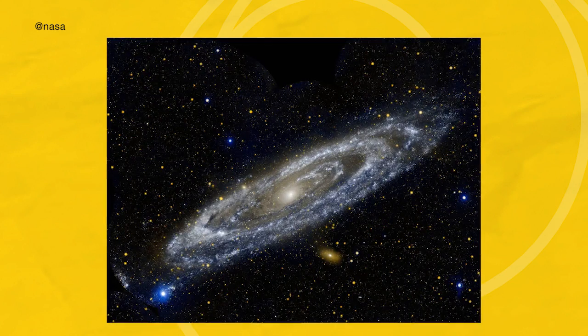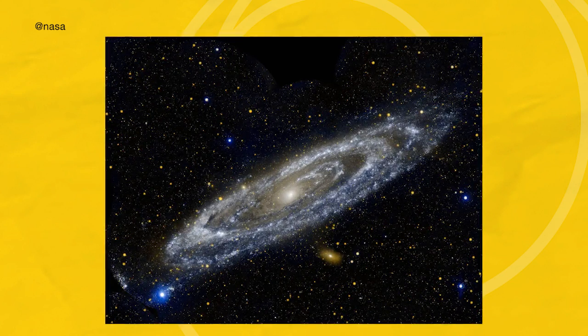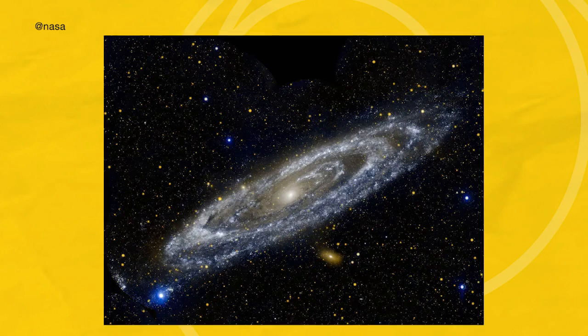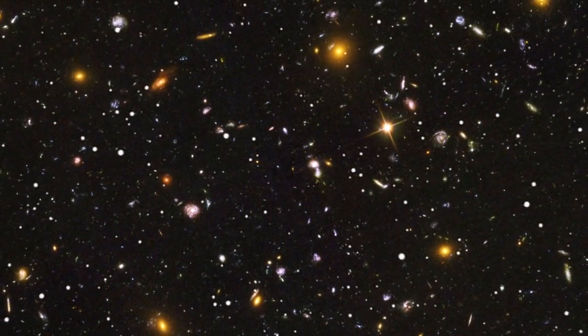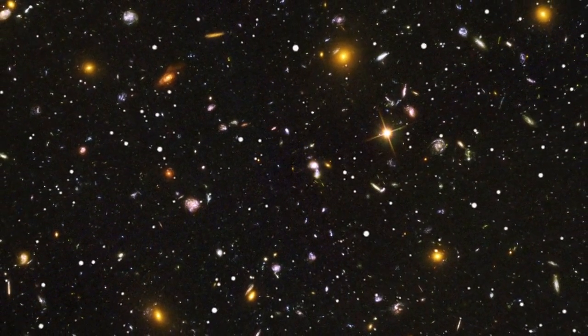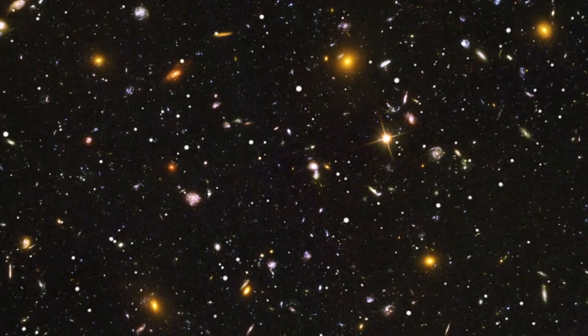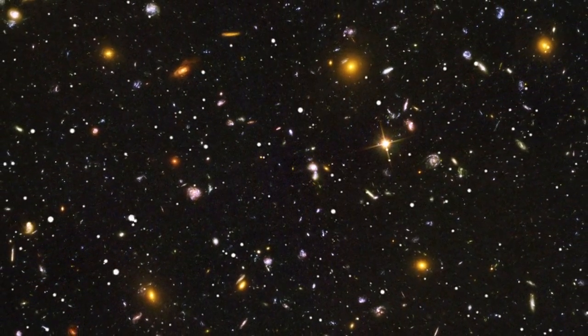Some galaxies lead solitary lives, and others assemble into groups and clusters of increasing size. As we continue to zoom out, entire galaxies, each one home to hundreds of billions of stars, appear as tiny motes of light adrift in an unlit ocean.